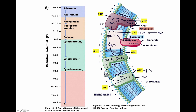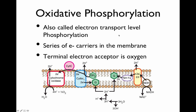You'll notice that in this process of moving electrons through different complexes, the work done is to move protons across the membrane, generating an electrochemical gradient — like charging a battery across the membrane. This is called oxidative phosphorylation, also called electron transport level phosphorylation. You have a series of electron carriers in the membrane, and the terminal electron acceptor is oxygen.